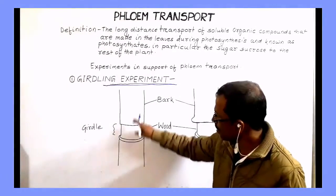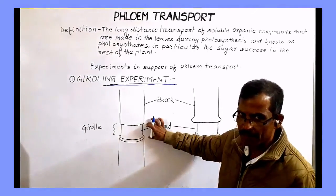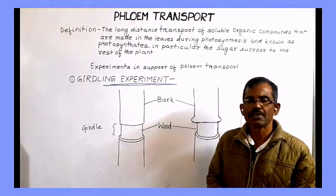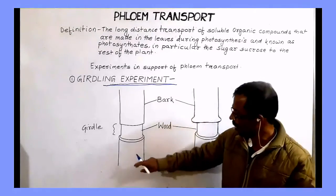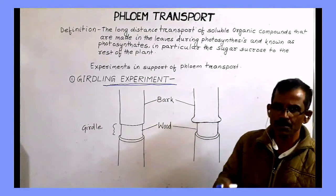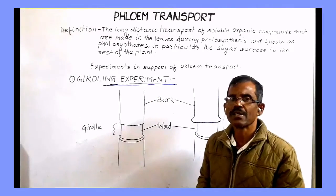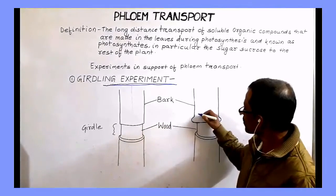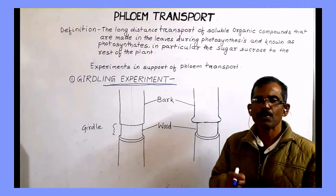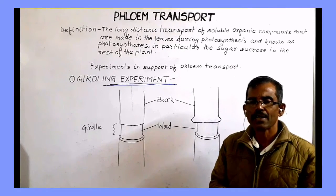This is the trunk of a tree and in this part, we have removed the bark containing phloem, but the xylem remained intact. As a result, the transport of water from root to the leaf was not affected, but the transport of photosynthates downward from the leaf to the root was interrupted. As a result, there was accumulation of photosynthates in the region above the girdling. So, this experiment provided evidence that translocation actually takes place in phloem.